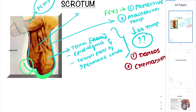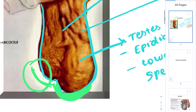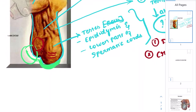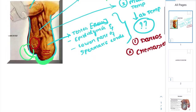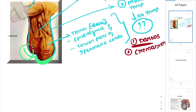The dartos muscle is responsible for the wrinkles you can see on the scrotum surface. The cremaster muscle elevates the testes — that is how it helps the male reproductive system maintain the appropriate temperature.